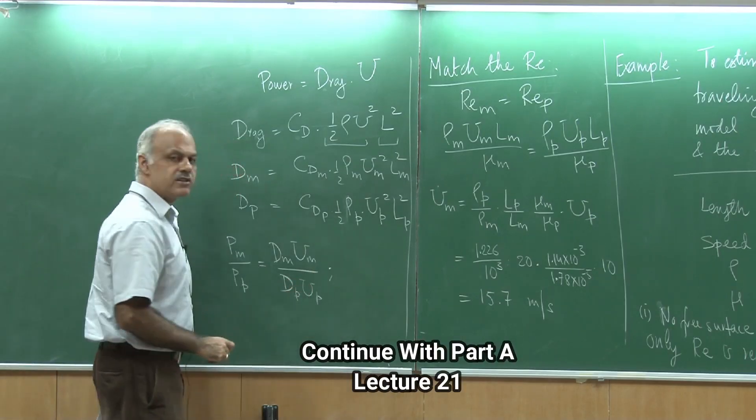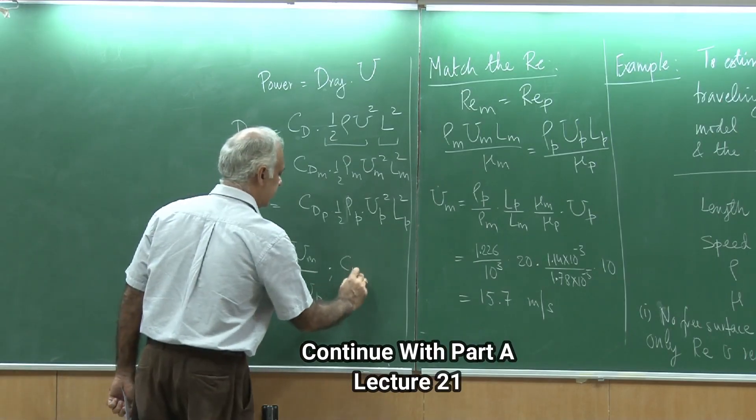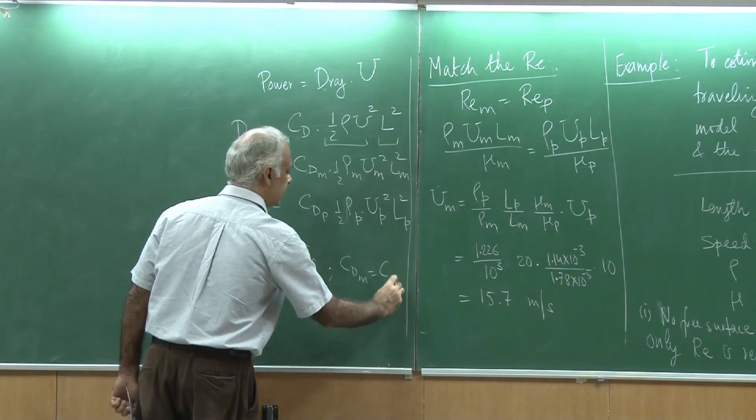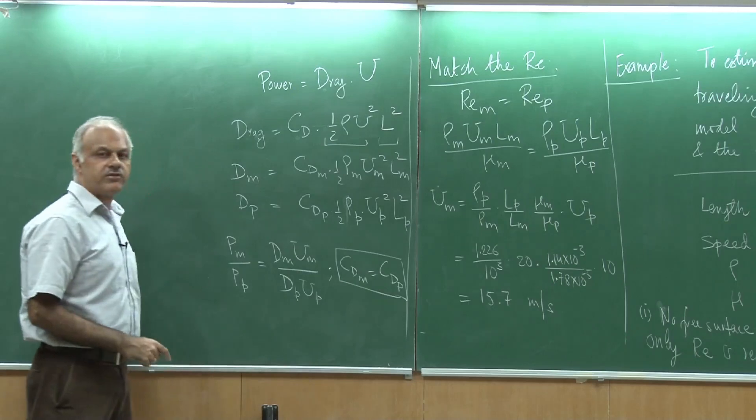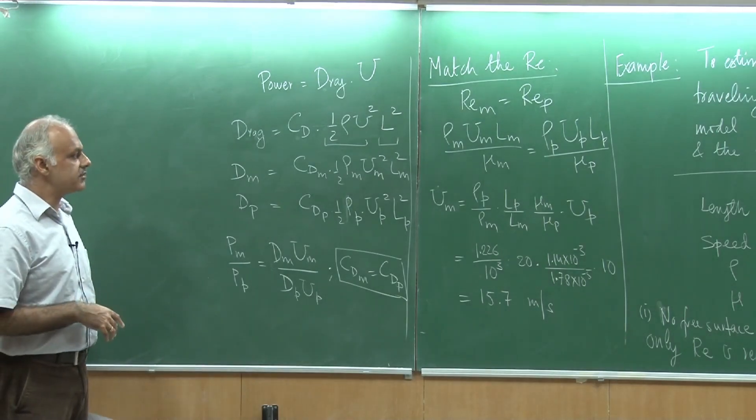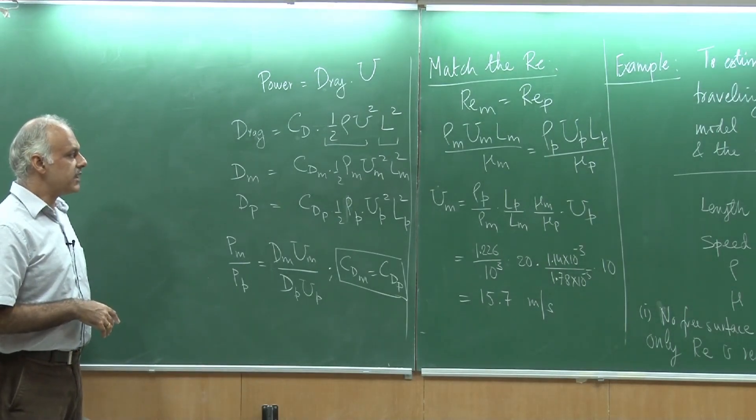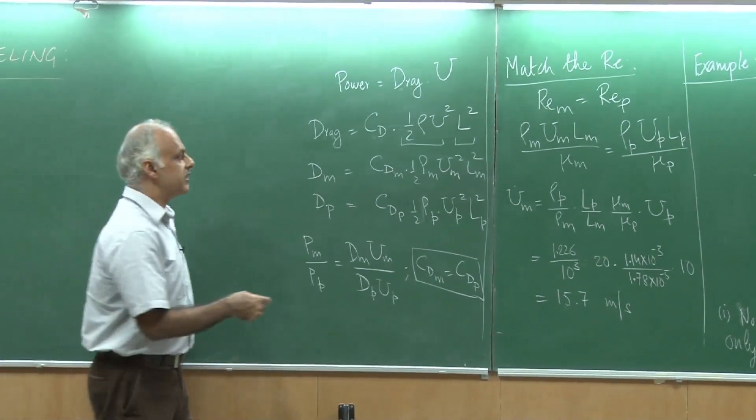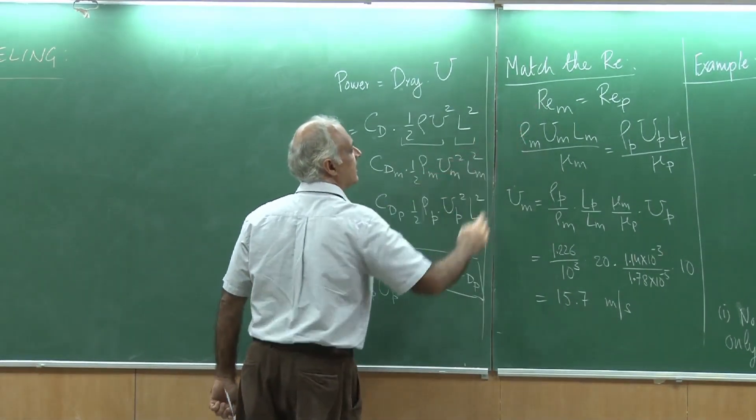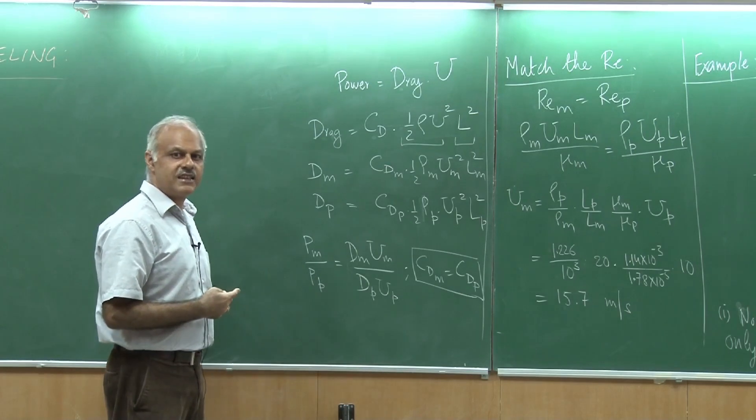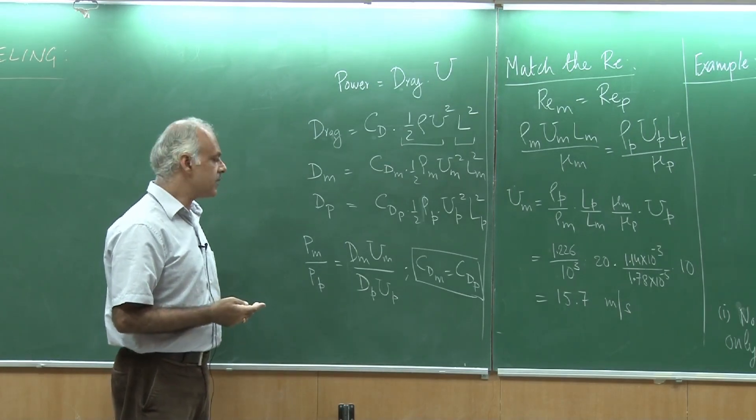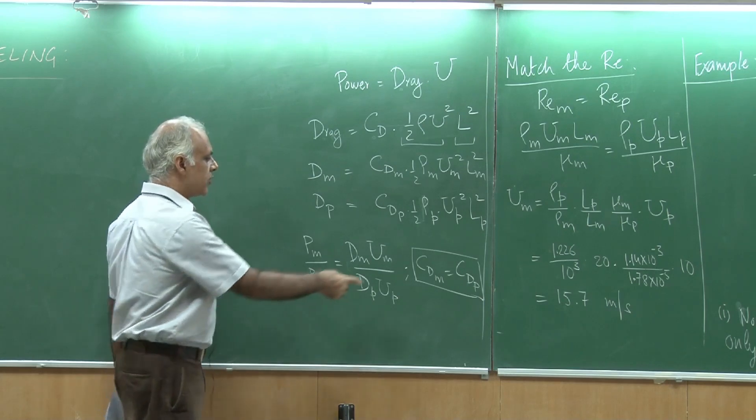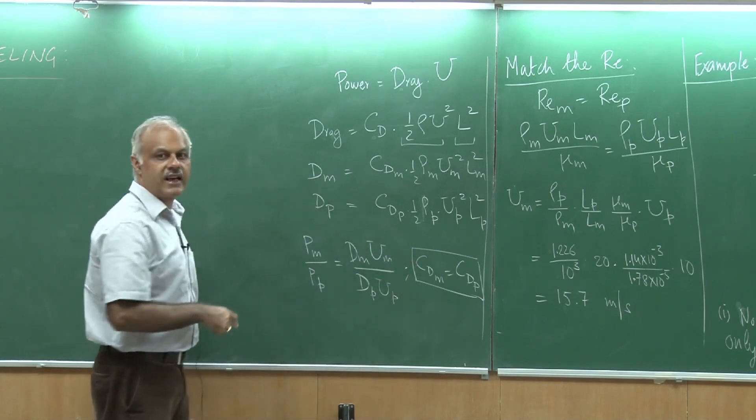You will note that because of dynamic similarity, CD model equals CD prototype. This is an outcome of dynamic similarity, because we have shown that if Reynolds number is identical, and only viscous and inertial effects are important, then the drag coefficients will also be identical. Mind you, the coefficients are identical, but not the drags.